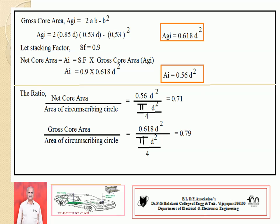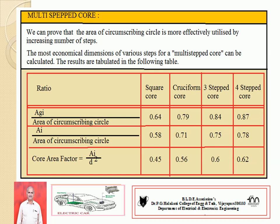The ratio of net core area to area of circumscribing circle for the two-stepped core is 0.71, and gross core area to area of circumscribing circle is 0.79. For multi-stepped cores — where the number of steps used is above two — observe from the table that from an economical point of view and for more utilization of core area, the four-stepped core gives utilization factor of 0.87. The utilization factor of the core increases with stepped cores and multi-stepped cores.